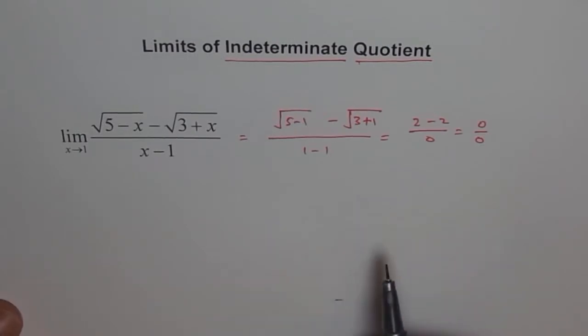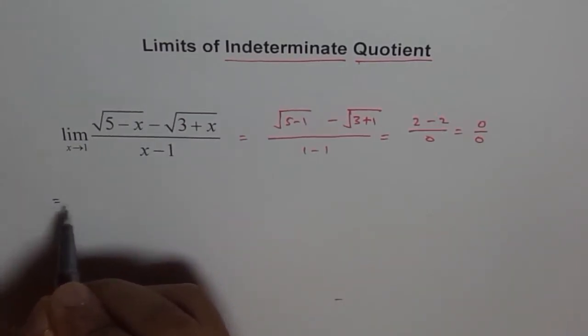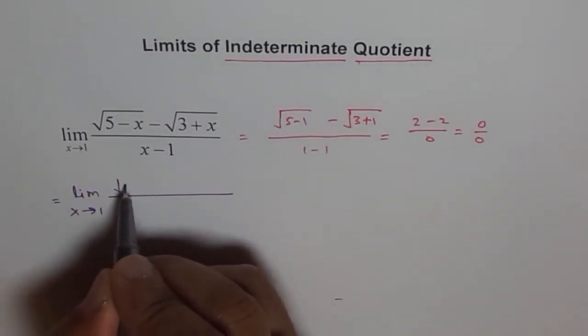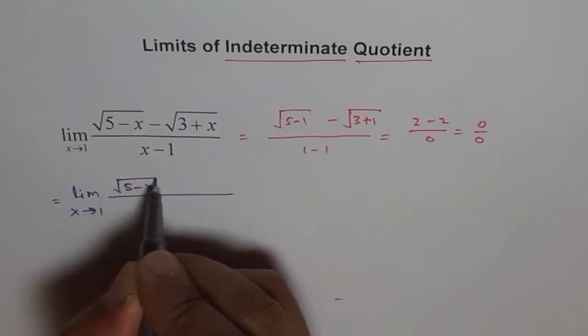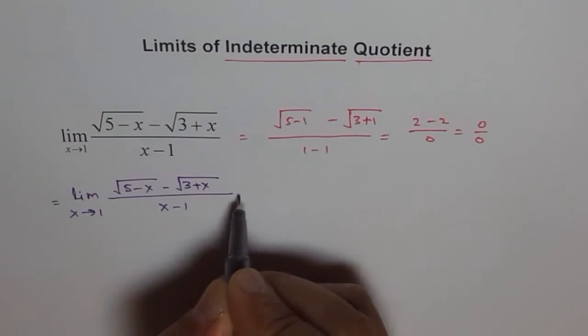Well, here I will adopt a simple technique of rationalization. So let's do that. We can write this as limit x approaches 1. In rationalization, you remember, right?